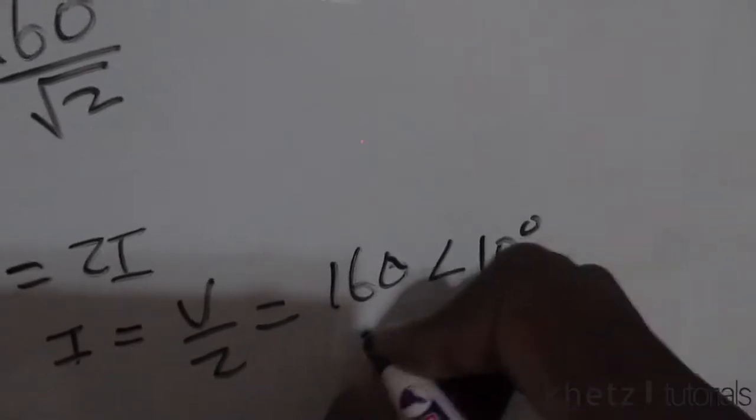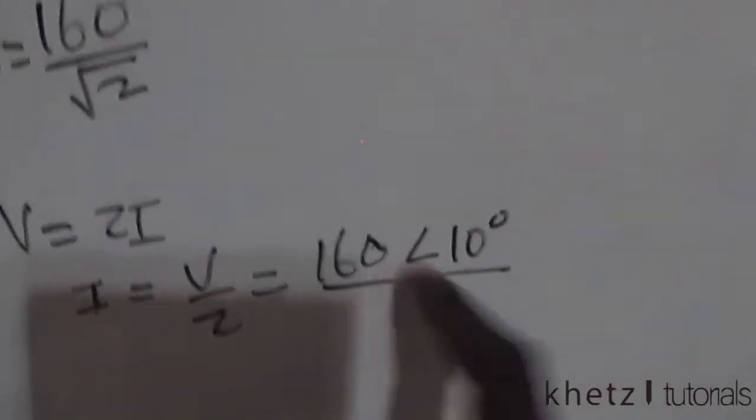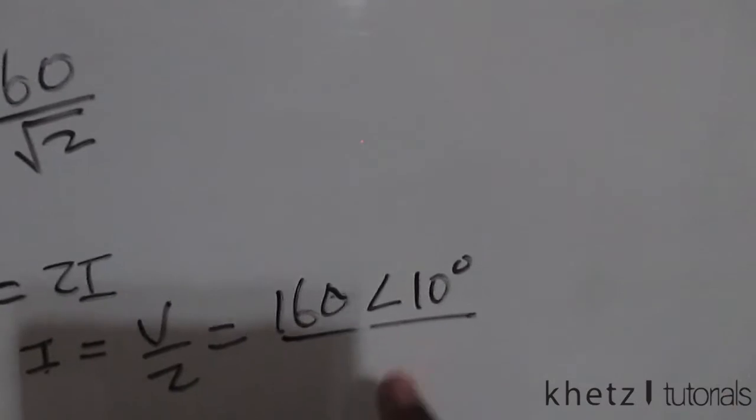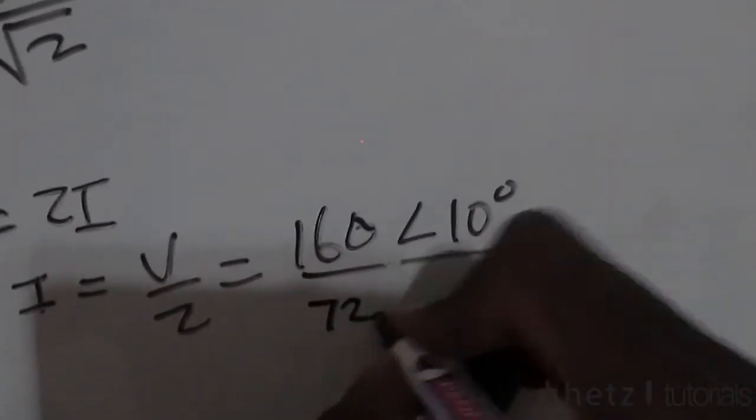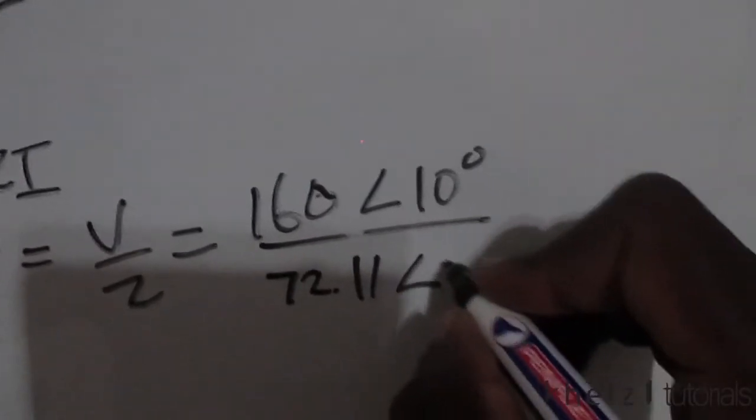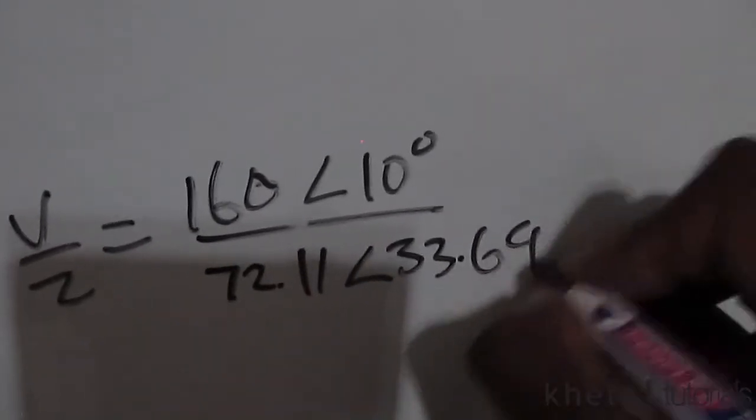We're going to use the raw value without computing the RMS first. So now we have this raw value divided by the impedance, the impedance which we have to be 72.11 with an angle of 33.69 degrees.